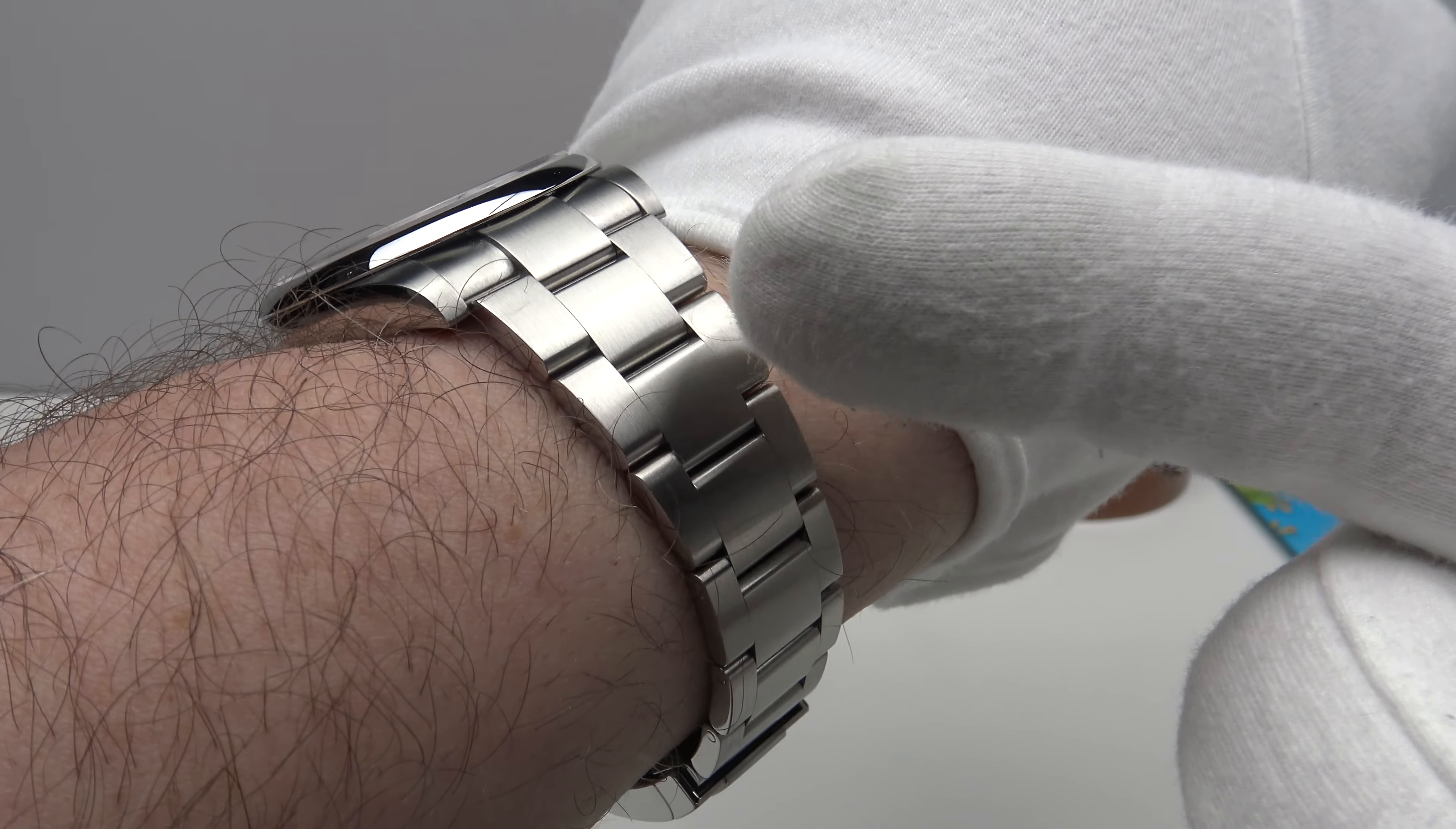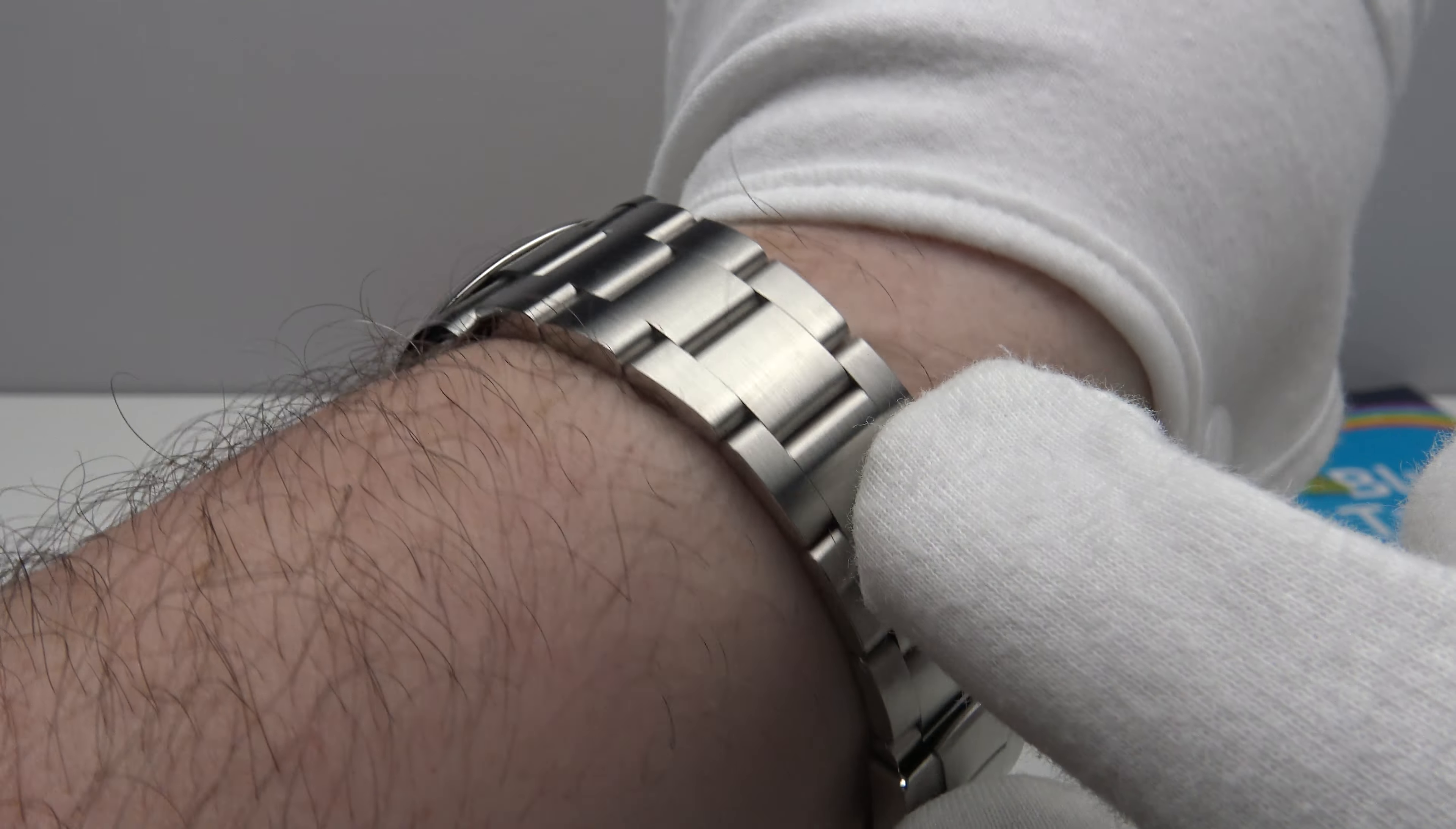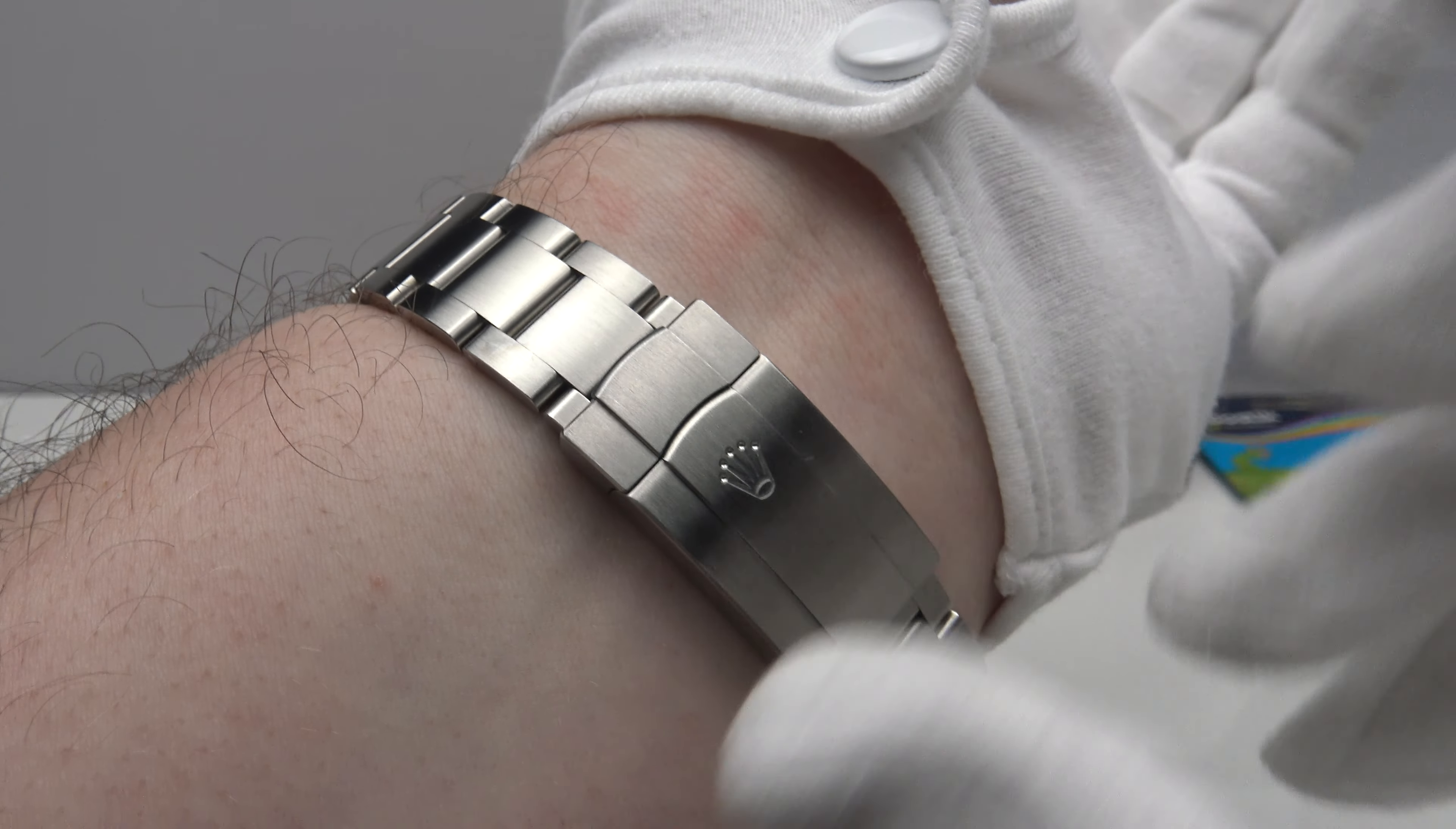904L oyster steel is actually a slightly softer material than 316L. Now the benefit is that it does gain a lovely luster. As you can see the grains of the oyster steel do have a lovely sheen. There is a lovely luster to 904L which is superior to 316L grade stainless steel.